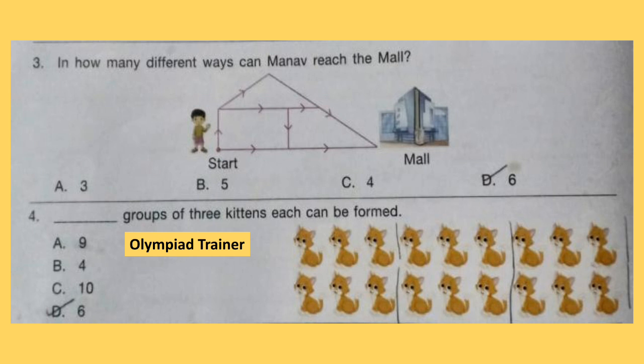Question 4. Dash groups of 3 kittens each can be formed. Cut out 3 kittens and then count the number of groups formed. The answer will be option D.